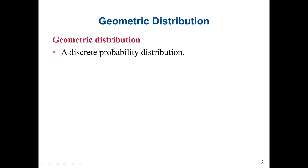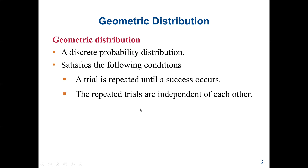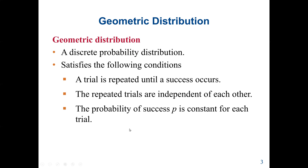Geometric distribution is a discrete probability distribution, which means it's based on counting. It satisfies the following conditions: a trial is repeated until a success occurs, the repeated trials are independent of each other, and the probability of success, P, is constant for each trial.